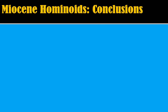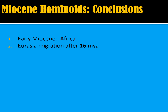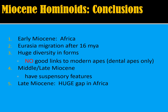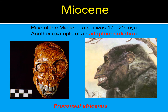The Miocene hominoid conclusions: during the early Miocene in Africa there was a Eurasian migration after 16 million years ago. There's a huge diversity of forms during the Miocene, but no real good links to modern apes in terms of post-cranial anatomy — only good dental matches. The only really good match is Sivapithecus to orangutans. In the middle to late Miocene, suspensory features and brachiation began to appear. In the late Miocene, there's a huge gap in Africa — apes may have moved to a new area or conditions for fossilization changed. Only five genera were left from all that diversity.